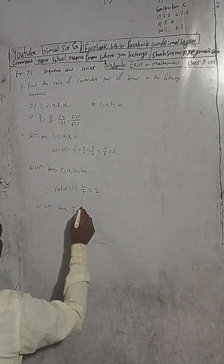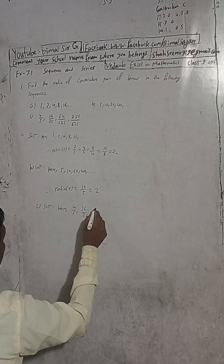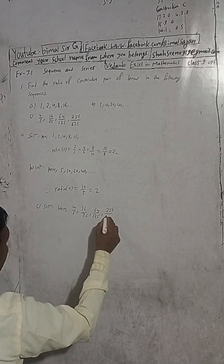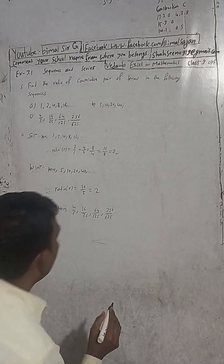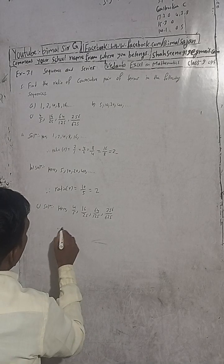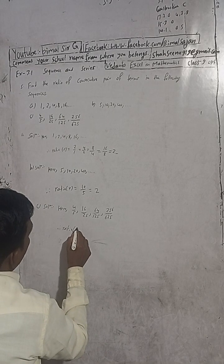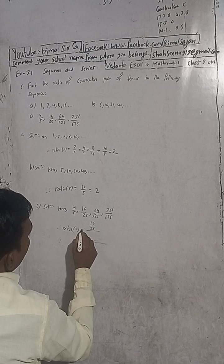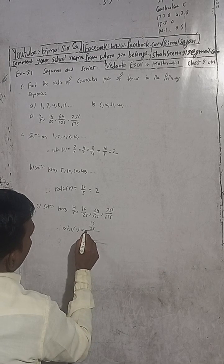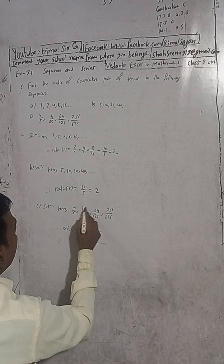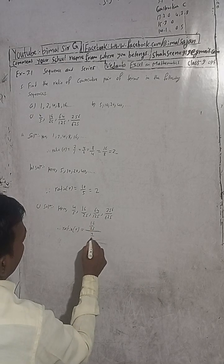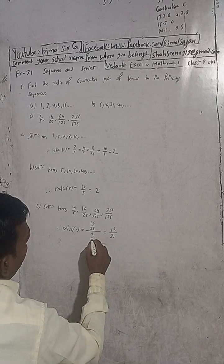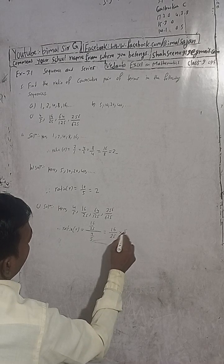The second sequence is: 4/5, 16/25, 64/125, 256/625. The ratio is equal to ratio is equal to — the common ratio of this sequence. Dividing 16/25 by 4/5 gives 4/5, and 64/125 divided by 16/25 also gives 4/5.